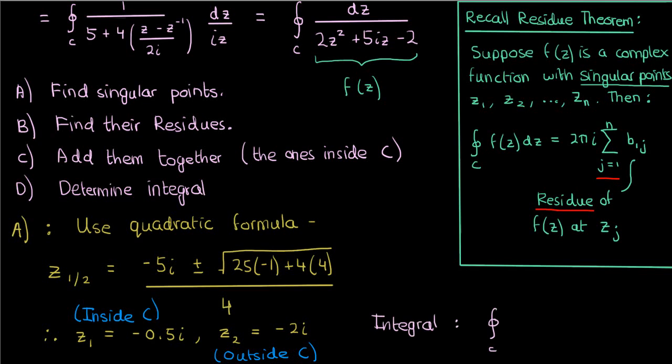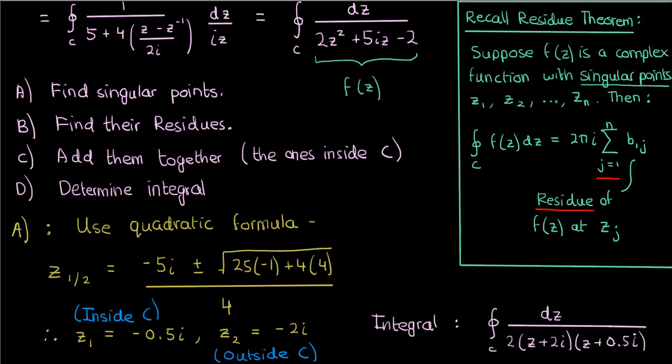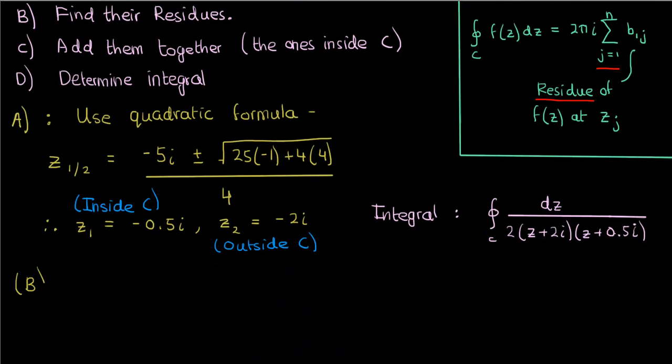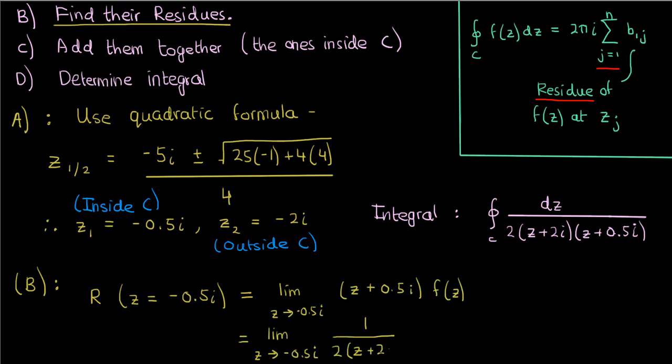Now, let's rewrite this integral in factored form, since we've already found the zeros of the denominator. And let's now find the residue at z1. Since z minus z1, or z plus 0.5i, only appears in the denominator once, it clearly corresponds to a simple pole. If you remember the previous lecture, then we can find the residues at simple poles by multiplying f of z by z minus z1, and taking the limit as z approaches z1. And if you compute the limit, you'll find that the residue is just 1 over 3i.